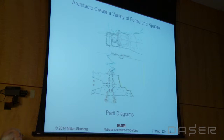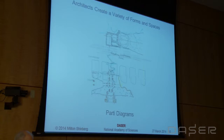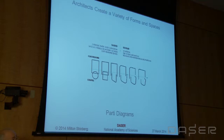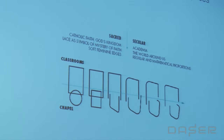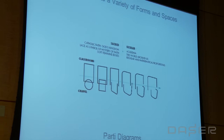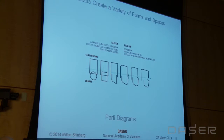We also do sketches on walks around, looking for the partee of the buildings we're seeing. Architects know how to think that way, but do we limit our thinking by starting with a partee instead of starting with experience? Here's a case of partees used for a building involving sacred and secular elements: on the left, Catholic faith and God's kingdom with soft feminine edges; on the right, academia and mathematical proportions. As these diagrams move together and apart, the form of a building emerges. But again, it's not really about experience — and that's why God invented erasers.